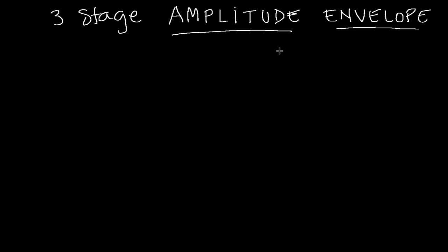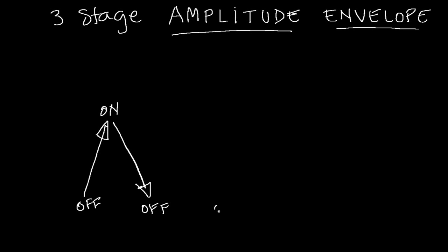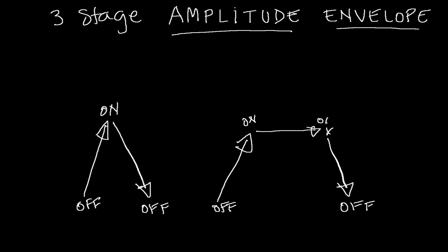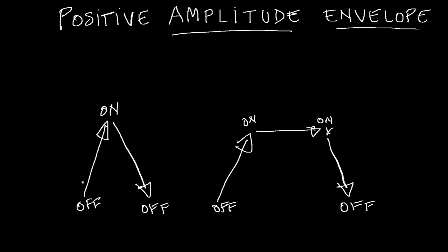Now there's probably something you've noticed with the two and three stage simple amplitude envelopes — they both go from silence or an off state up to the on or loudest state, and then back down to silence or the off state. In both cases we're going from silence to loudest back to silence. Both those envelopes are positive amplitude envelopes — because we go from silence or a lower level up to a louder level and back to silence.